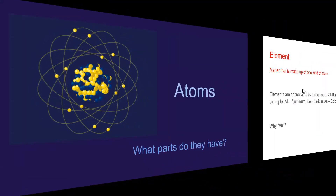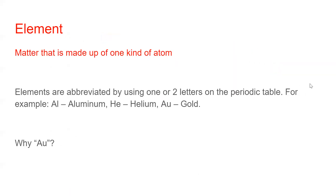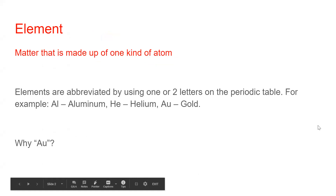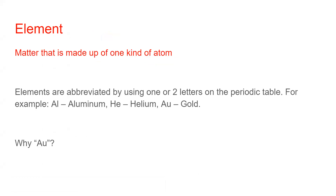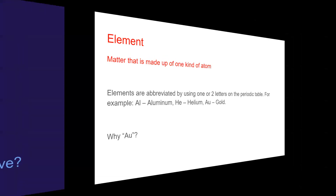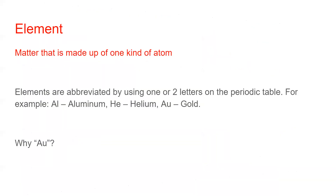First, elements — this is a review term. Elements are matter that's made up of one kind of atom. Elements are abbreviated by using one or two letters on the periodic table. Some of the symbols don't make sense yet, but examples include Al for aluminum, He for helium, or Au for gold.